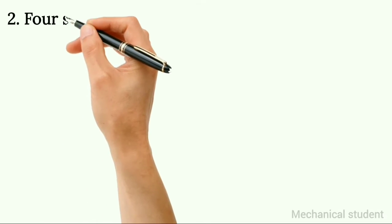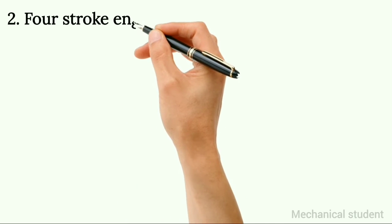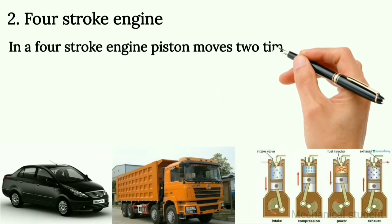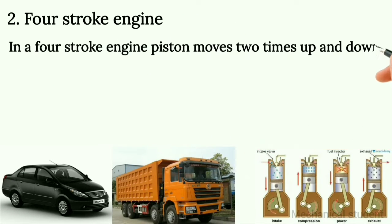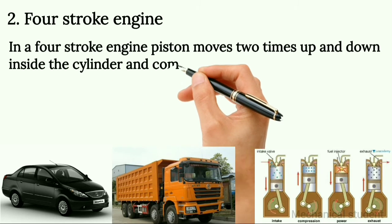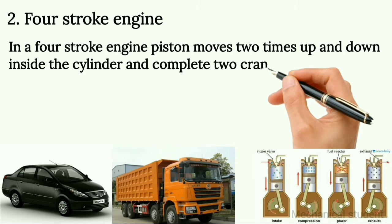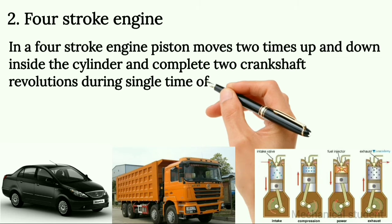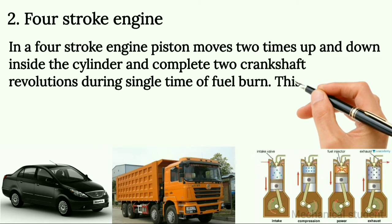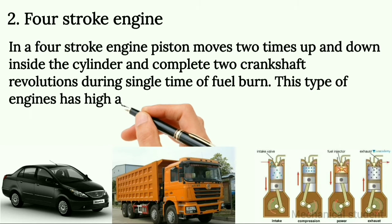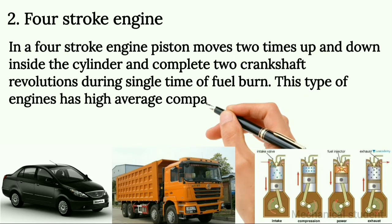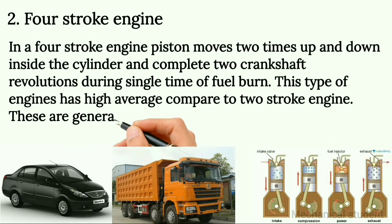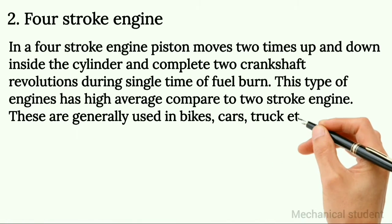Second type: four stroke engine. In a four stroke engine, the piston moves two times up and down inside the cylinder and completes two crankshaft revolutions during a single time of fuel burn. This type of engine has high mileage compared to two stroke engine. These are generally used in bikes, cars, trucks, etc.